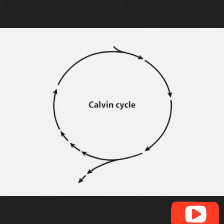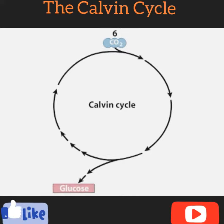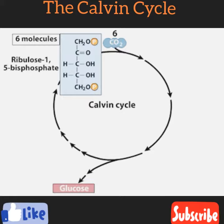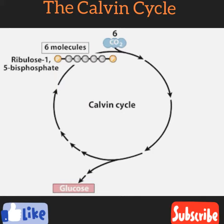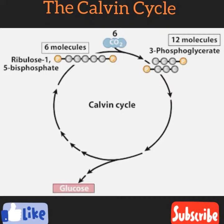In the Calvin cycle of photosynthesis, six molecules of CO2 are used to generate one molecule of glucose. In these reactions, each CO2 molecule is joined to a molecule of the CO2 acceptor, ribulose bisphosphate, or RuBP, which then splits into two molecules of 3-phosphoglycerate. The reaction is catalyzed by the enzyme Rubisco.